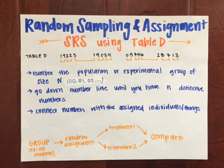Random sampling is using a chance process to determine which members of a population are used in a sample. We can do this through taking a simple random sample, or an SRS, in which every group of n individuals in the population has an equal chance to be selected as the sample. On the other hand, random assignment uses a chance process to assign experimental units to treatments.